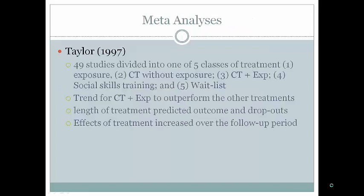Meta-analyses examining these interventions divided 49 studies into five treatment classes: exposure-based, cognitive therapy without exposure, cognitive therapy plus exposure, social skills training, and waitlist control. The trend was for cognitive therapy plus exposure to outperform the other treatments, which makes sense because you're exposing the person to the feared stimulus while simultaneously doing cognitive restructuring. Shorter treatment lengths predicted better outcomes.